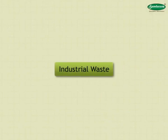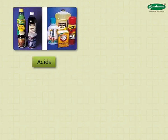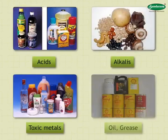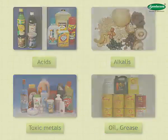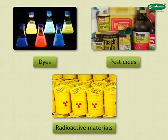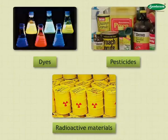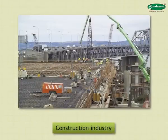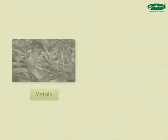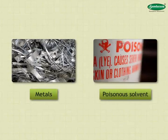Industrial Waste: Waste materials like acids, alkalies, toxic metals, oil, grease, dyes, pesticides and even radioactive materials are poured into water bodies by many industrial units. The construction industry discharges slurries such as gypsum, cements, abrasive metals and poisonous solvents.